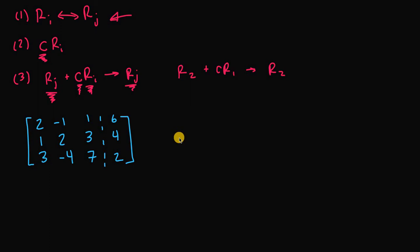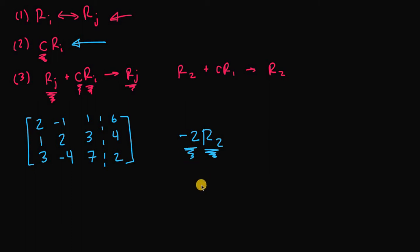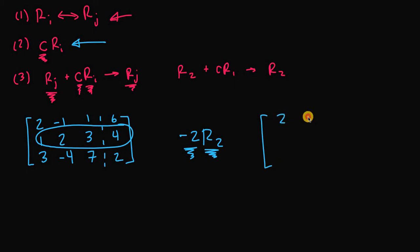Let's do another one. We want to perform the operation negative two times r2. We're using the second rule — taking row two and multiplying it by the non-zero constant negative two. So our new matrix keeps the first row as 2, -1, 1, 6 and the third row as 3, -4, 7, 2, while we multiply every element in row two by negative two.